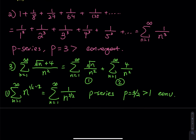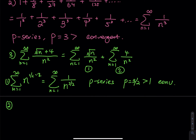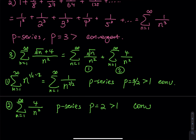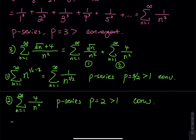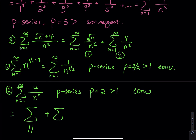For the second piece: the sum from n=1 to infinity of 4 divided by n² is a p-series with p equal to 2, which is greater than 1, so it's convergent. Since we have convergent sum plus another convergent sum — a real number plus another real number — the total must be a real number. Therefore the entire series is convergent.